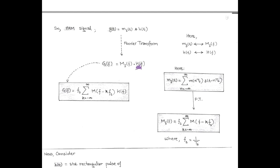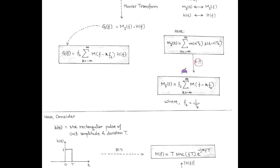Now, as we know that m_delta(t) equals the summation from n equals minus infinity to infinity of m(n*Ts) times delta(t minus n*Ts), where f_s is the sampling frequency and k is any constant varying from minus infinity to infinity. After substituting the Fourier transform of m_delta(t), we get the PAM signal in frequency domain: G(f) = f_s * summation of M(f minus k*f_s) times H(f).